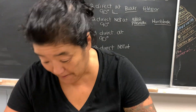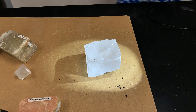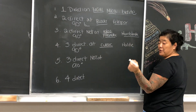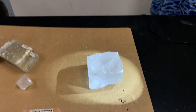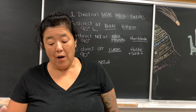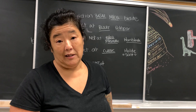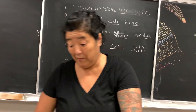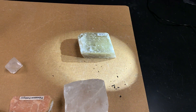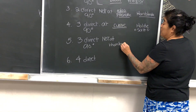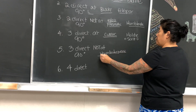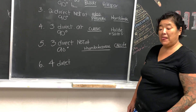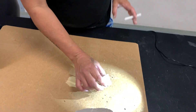Three directions at 90 degrees is called cubic cleavage. Halite — which is the mineral name for salt — is a great example, and you'll be looking at it under a microscope as part of your lab assignment. Three directions not at 90 degrees is called rhombohedral cleavage — remember the word rhombus — and a good mineral example for that is calcite.